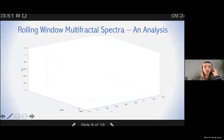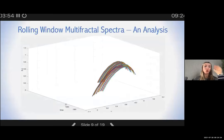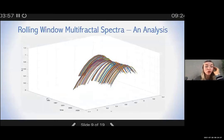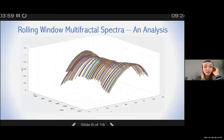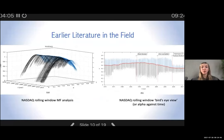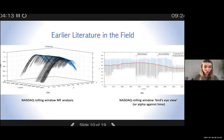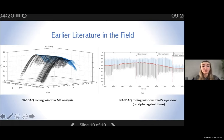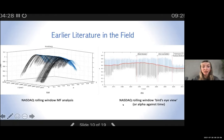In this section I'll discuss the results of the rolling window multifractal analysis performed upon two European indices, and we can see the formation of F-alpha curves as time progresses. The research paper from which this section finds its foundation is called 'Dynamical Variety of Shapes in Financial Multifractality,' the results of which show a rolling window multifractal analysis — a timeline of F-alpha curves for the NASDAQ over 50 years — and also a bird's eye view of the values of alpha against time.